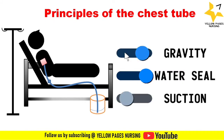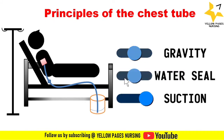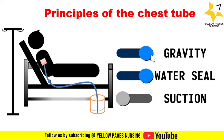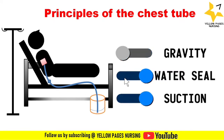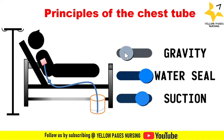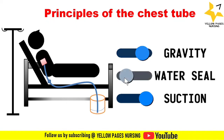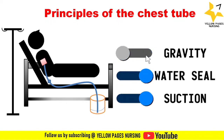There are different types of underwater seal drainage systems: single chamber, double chamber, and triple chambered. When suction is needed, we may need to use double or triple chambered systems. Mostly the triple chambered system is used.